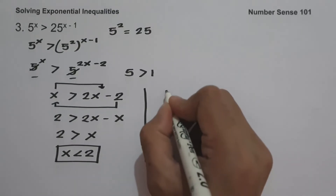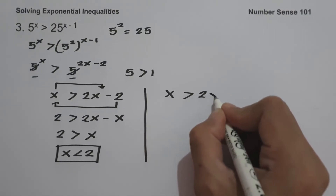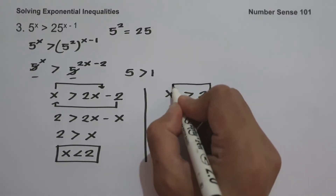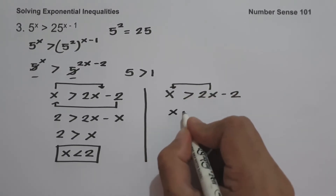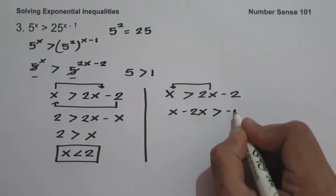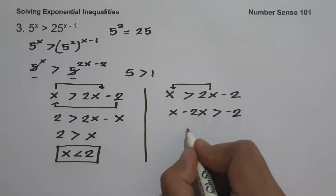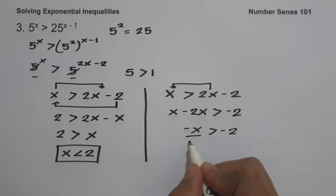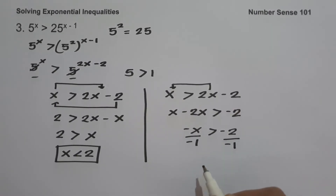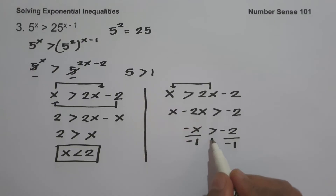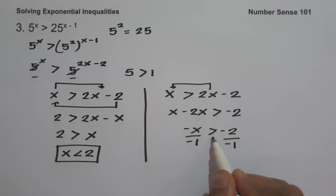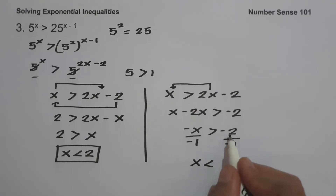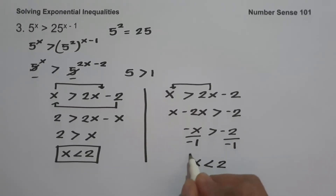Another solution: from x greater than 2x minus 2, move 2x to the side of x, giving x minus 2x greater than negative 2, which is negative x greater than negative 2. Dividing both sides by negative 1 — remember, dividing by a negative number reverses the inequality — changes greater than to less than. So x is less than negative 2 divided by negative 1, which is positive 2.